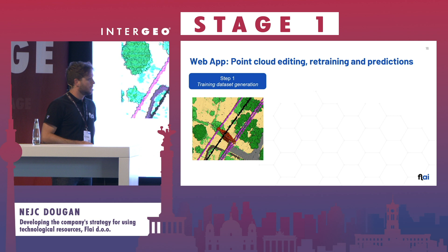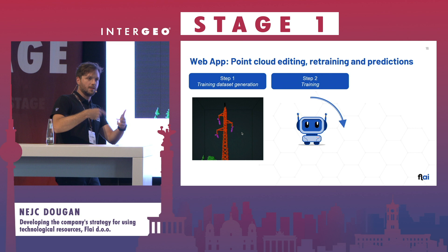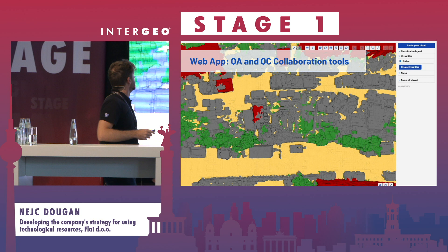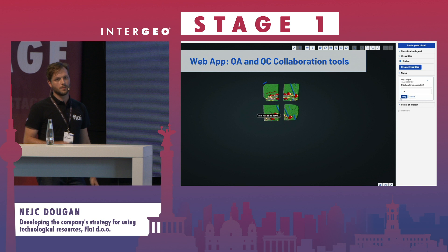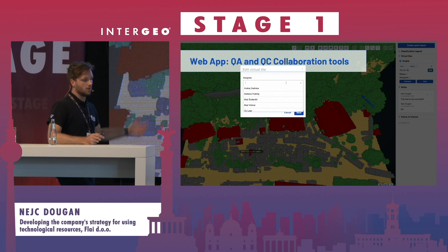Another thing we offer via the web app is retraining of models — you can create your own annotations, run the retraining algorithms, and generate new AI that is customized for you. We also offer quality control and quality assurance collaboration tools, through which you can annotate point clouds easily, share notes between team members, assign tasks to each individual annotator working on the dataset, and monitor progress.